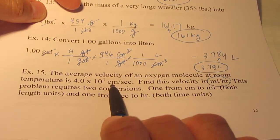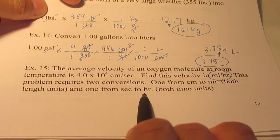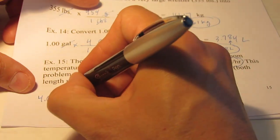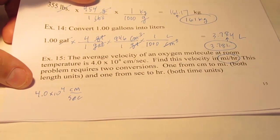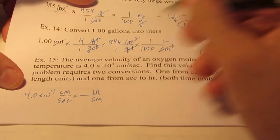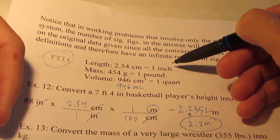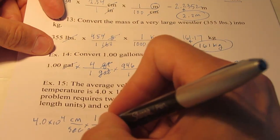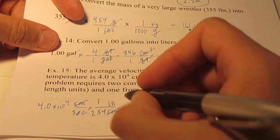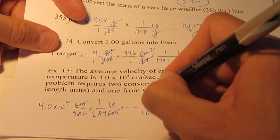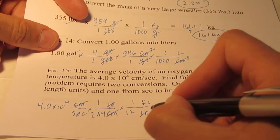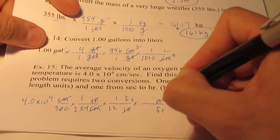This problem will consist of two conversions. One from centimeters to miles, I need to change my numerator. And one from seconds to hours, my denominator has to change. So 4.0 times 10 to the 4th centimeters per second. I'm going to change my numerator to miles first. I don't know how many centimeters are in a mile. But I do know that one inch is 2.54 centimeters. So I'm going to get out of inches and into feet. One foot has 12 inches.